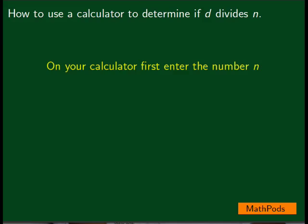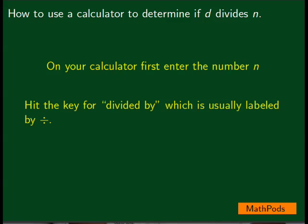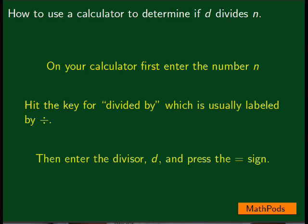We'll now learn how to use a calculator to determine if a whole number d divides a whole number n. On your calculator, first enter the number n. Hit the key for divided by, which is usually labeled by the division sign. Then enter the divisor d, and press the equal sign.